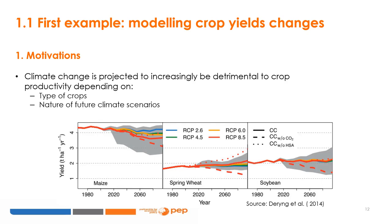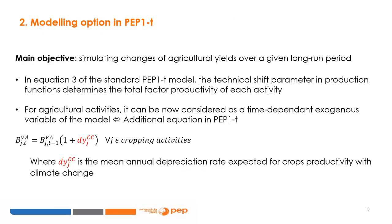This effect of climate change is described in many studies in agronomic literature. For a majority of crops, yields are expected to be negatively affected by climate change. However, it will depend on the type of crops and the type of future climate scenarios considered. In the most unfavorable cases, like for instance soybeans, yields are expected to decrease by 50% until 2100. An easy option for modeling long-run crop yield changes is to consider that the technical shift parameter in the production function of agricultural activities becomes a time-dependent new variable of the model.